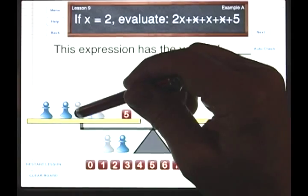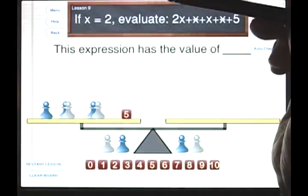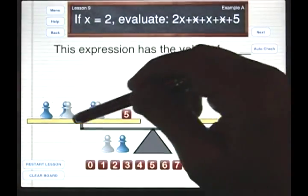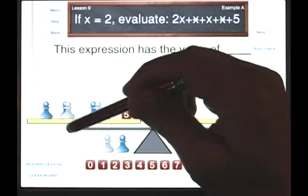If this x is 2, this star is negative 2, and together they're worth 0. So since these are worth 0, they don't add anything to the value.